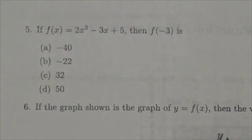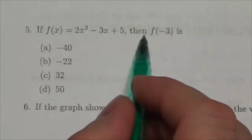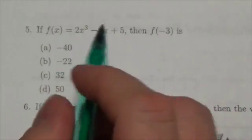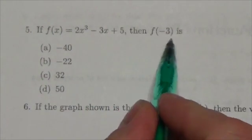Hi everyone, this question here is asking us to evaluate using function notation. So f(x) is equal to 2x cubed minus 3x plus 5, then f of negative 3 is.